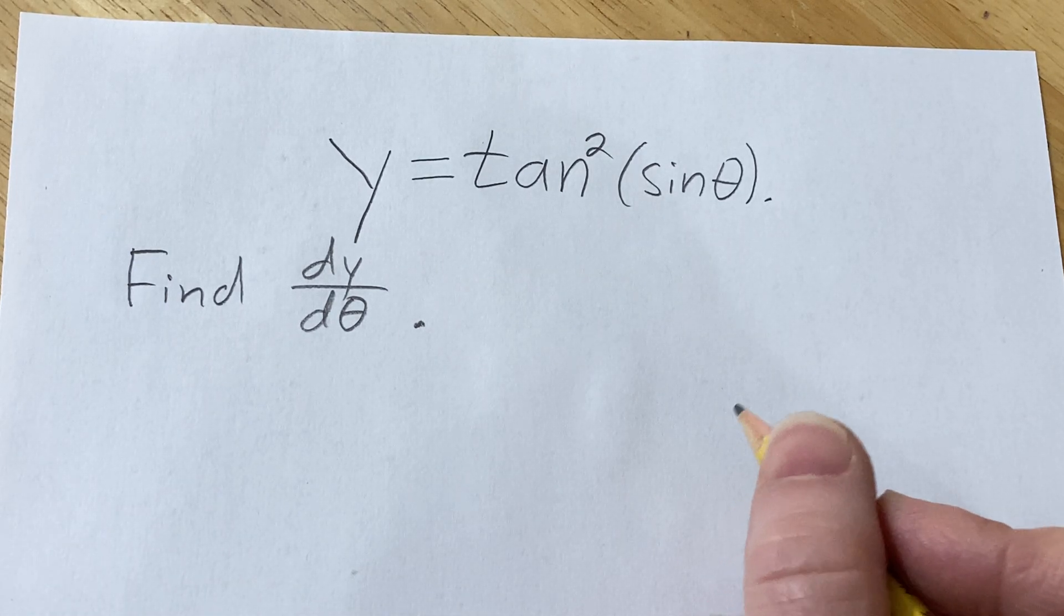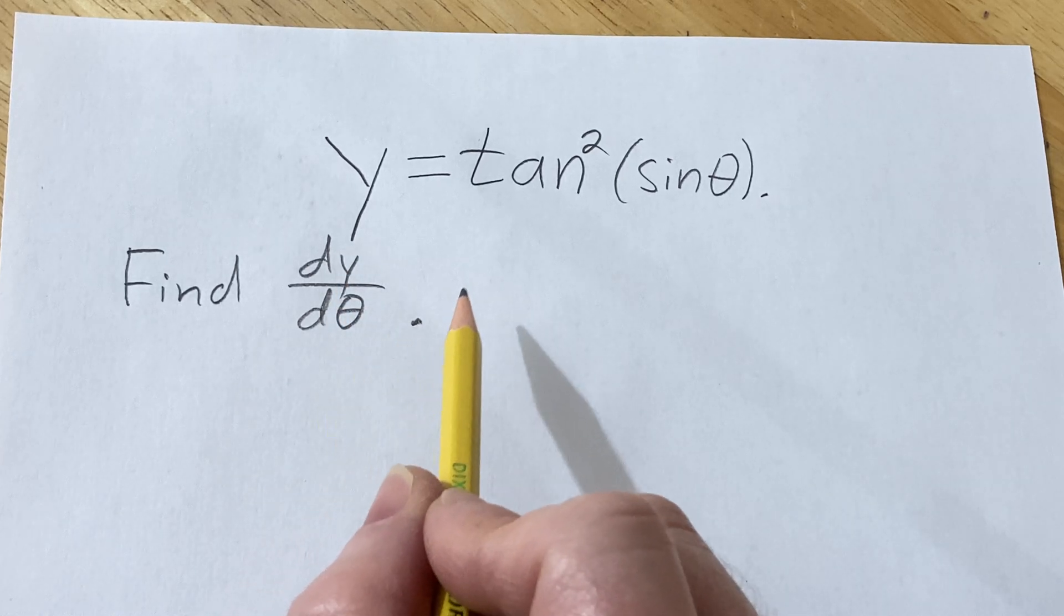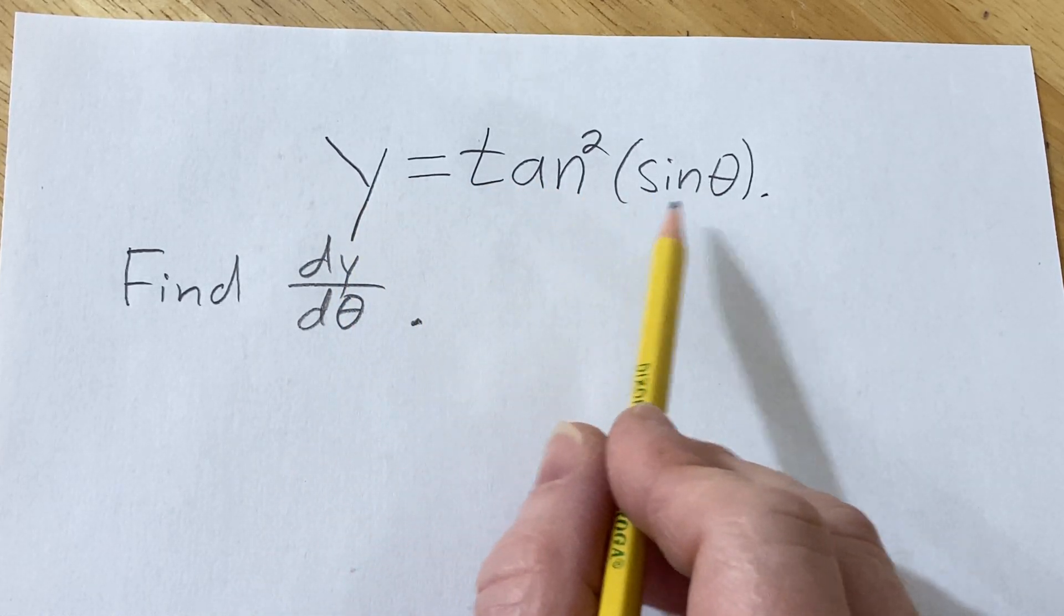Hello, in this video we're going to find the derivative of y with respect to theta, so dy/dθ. You have y equals the tangent squared of the sine of theta.